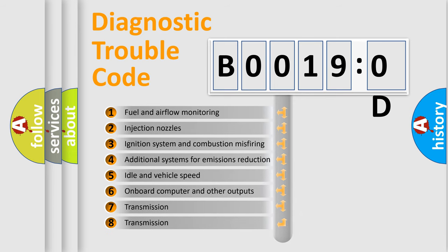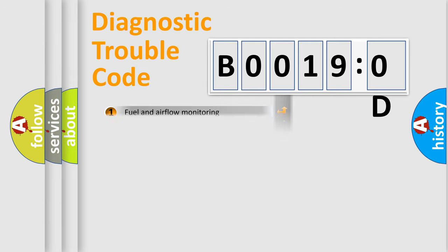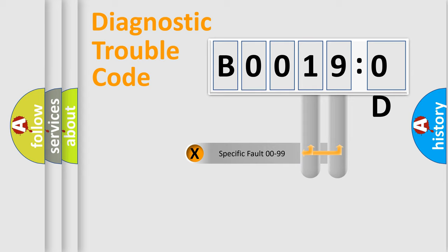The third character specifies a subset of errors. The distribution shown is valid only for the standardized DTC code. Only the last two characters define the specific fault of the group.